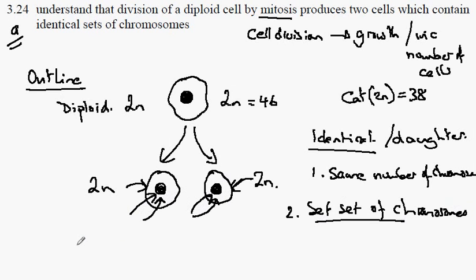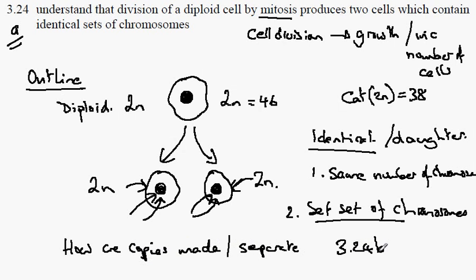We want to go on and ask a number of questions. How are the copies of chromosomes made? And secondly, how do they separate into the two cells? This is the subject of 324B.